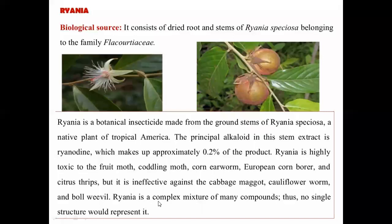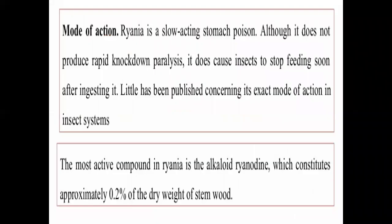Rania is a complex mixture of many compounds, so no single structure can represent it — natural products are always complex in nature. Regarding its mode of action: Rania is a slow-acting stomach poison. The action is slow and sustained. Although it does not produce rapid knockdown paralysis, it does cause insects to stop feeding soon after ingesting it. Little has been published concerning its exact mode of action in insect systems.